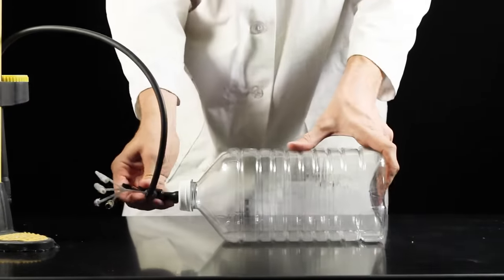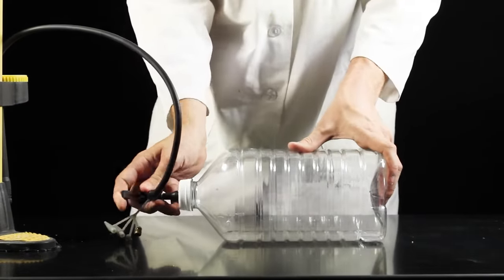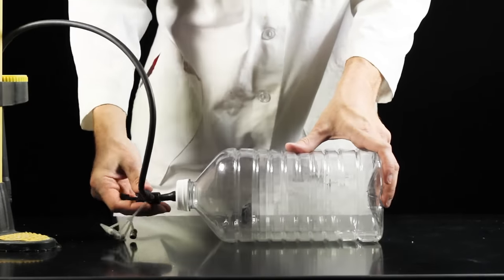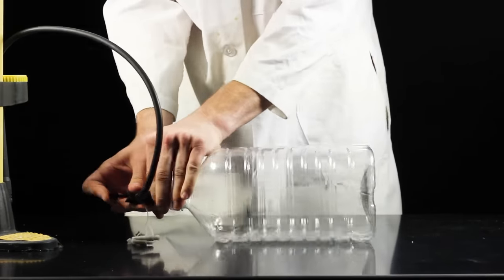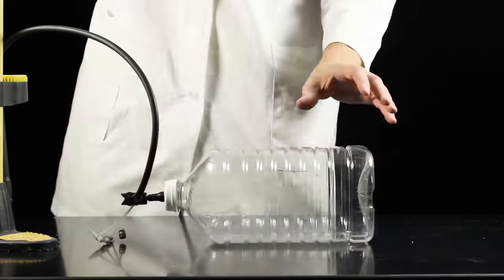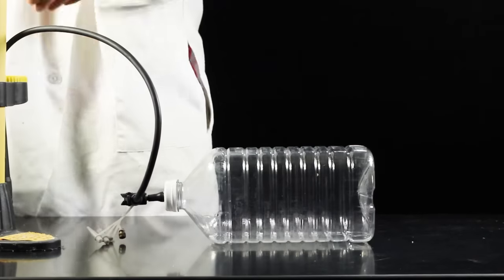Attach a bicycle pump to the end of the valve stem and pressurize the bottle to about 20 psi. Most bottles will rupture close to 100 psi, but 20 psi should be enough to make a cloud.